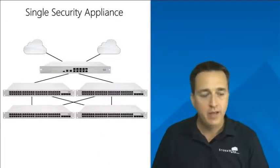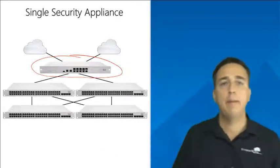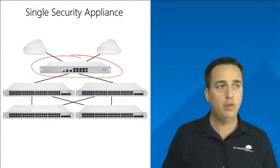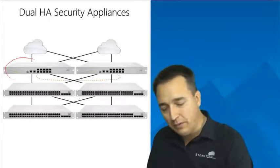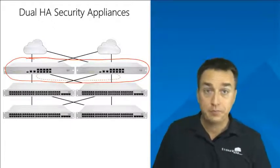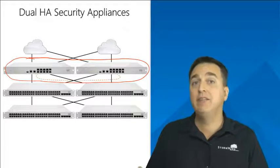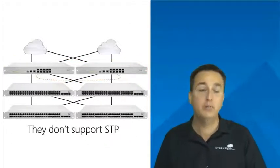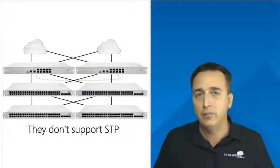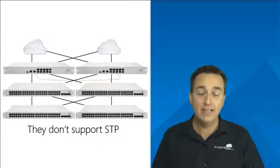First and foremost, let's look at this topology. We have a single security appliance topology, which is what many of you might deploy. But what we're lacking in this deployment is high availability. I'm a big fan of dual security appliance deployment because we get high availability with dual security appliances. However, we end up with many more caveats that many of us are not aware of. Our security appliances don't support spanning tree protocol, so when we implement this dual HA deployment with two security appliances, we could have a serious problem: layer two loops.